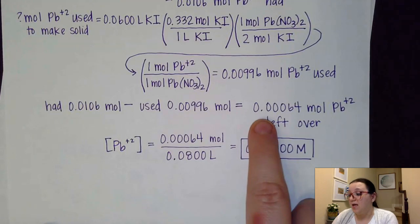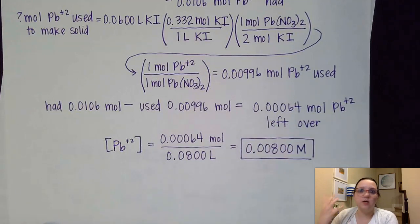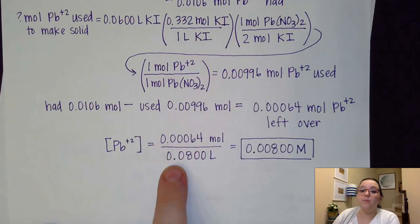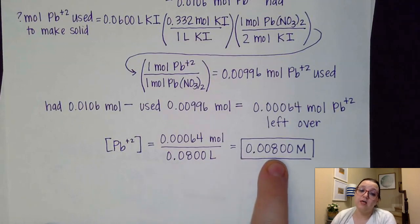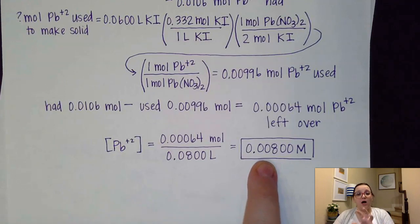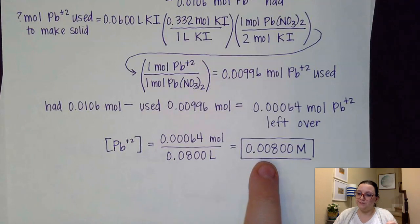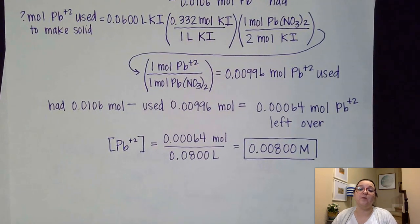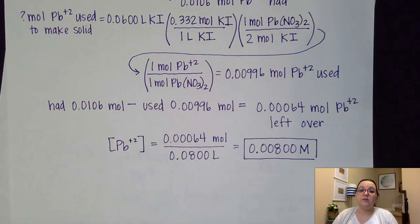Those leftover moles are in 80 milliliters of solution at the end. Dividing by 0.08 liters gives my molarity of those lead ions at the end. Notice that concentration is pretty small — but it should be small, because I used the bulk of that ion to make my precipitate, so only a few remain as ions in solution. Hopefully we're feeling confident with performing stoichiometry calculations involving solutions. That last calculation was a little bit tricky, so I strongly recommend practicing with these. If you have any questions, feel free to email me. Bye, guys.